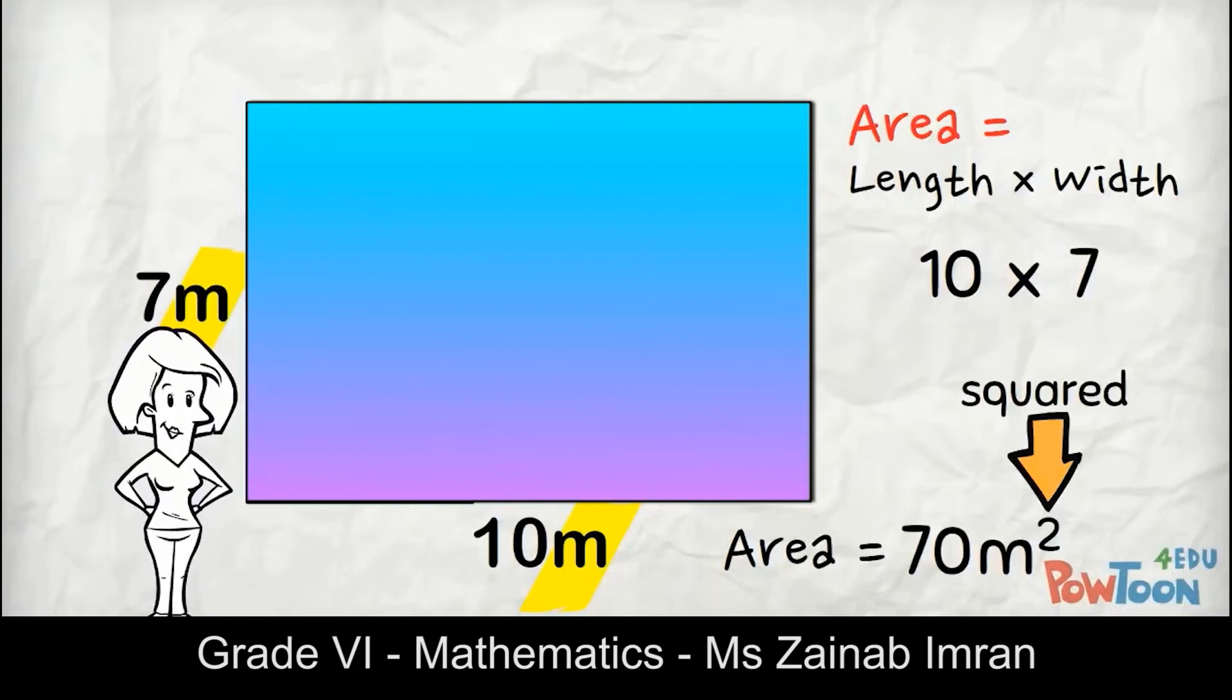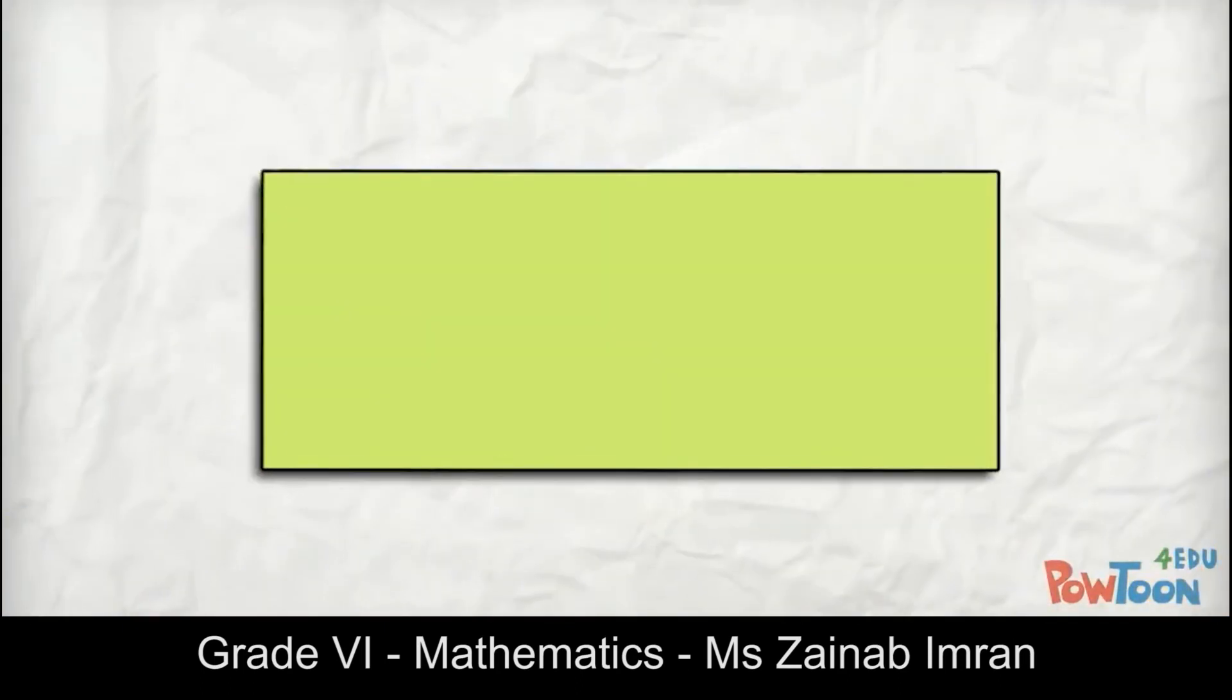Always use that unit of measurement squared in your answer. If you forget to, you will lose marks. And if by some chance you are not given a measurement unit, you write 'units squared' instead and you make sure of full marks that way.